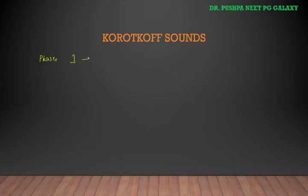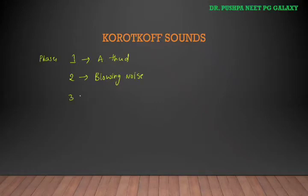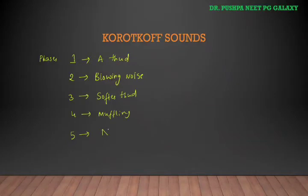Phase 1 is when we can hear a thud. Phase 2 is a blowing noise. Phase 3 is a softer thud. Phase 4 is a disappearing blowing noise, that is a muffling sound. In phase 5, there is no sound — this is the diastolic blood pressure.